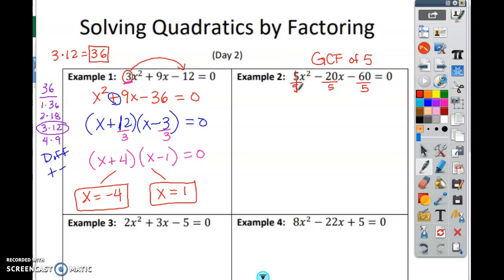5 divided by 5 cancels. That's 1x squared. What's negative 20 divided by 5? Negative 4. Negative 4x. And then what's negative 60 divided by 5? Negative 12. So in this case, because I don't have a number in the front anymore, I don't have to do what I did over here. Because if I would have multiplied 5 times 60, that's a really big number. That's 300. So you would have had to deal with the 300.